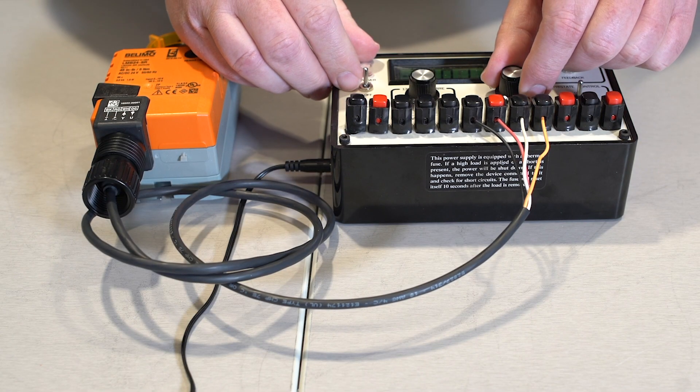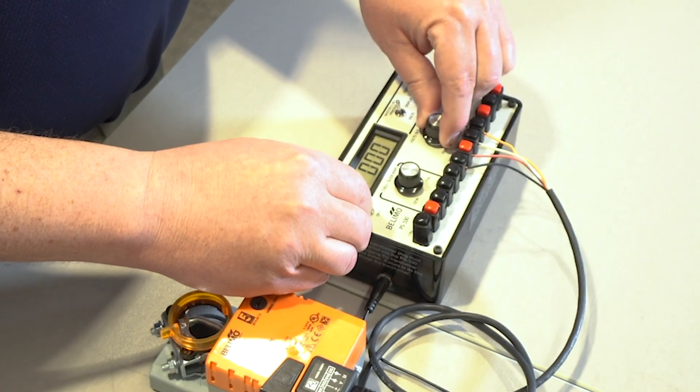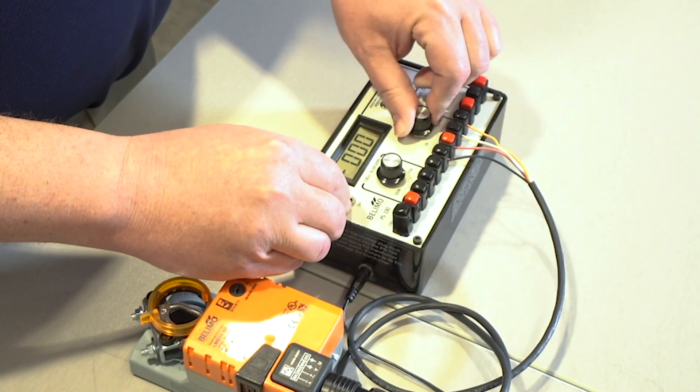And this will function with a 2 to 10 signal, so as you apply 2 volts to 10 volts, it will open or close the damper.